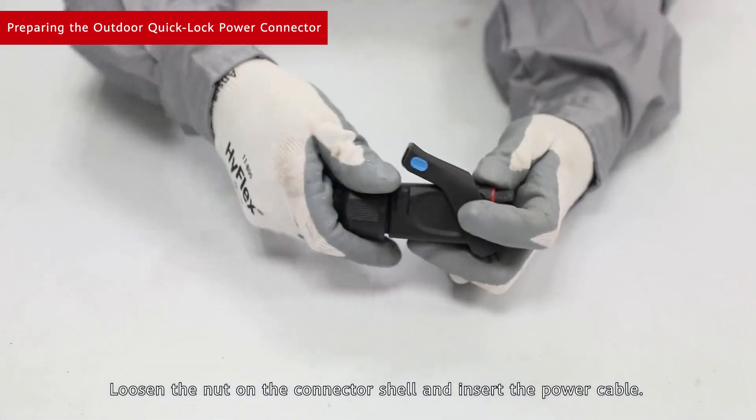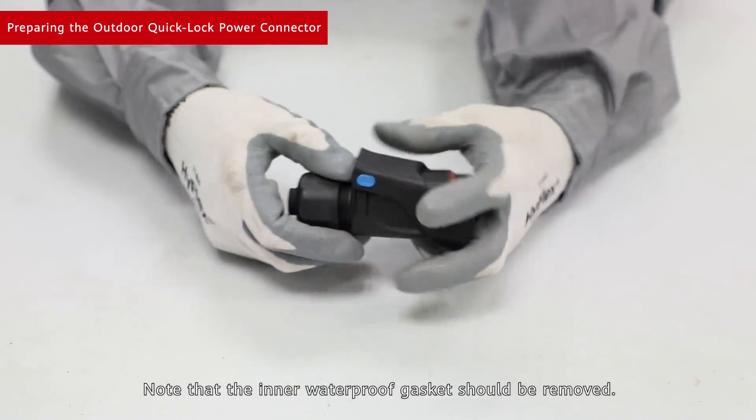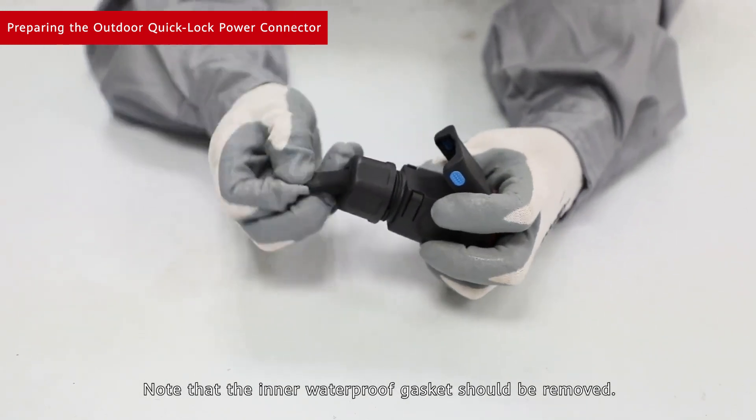Loosen the nut on the connector shell and insert the power cable. Note that the inner waterproof gasket should be removed.